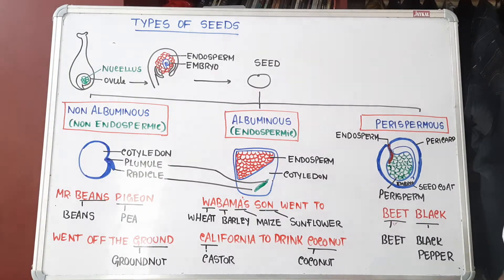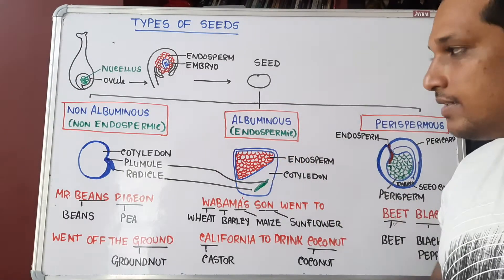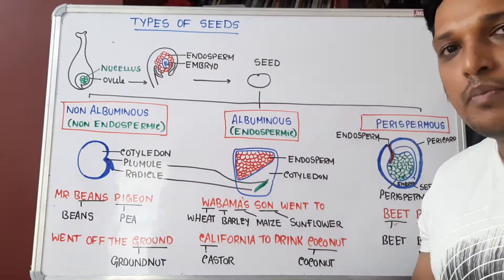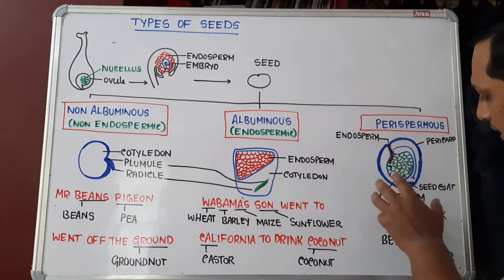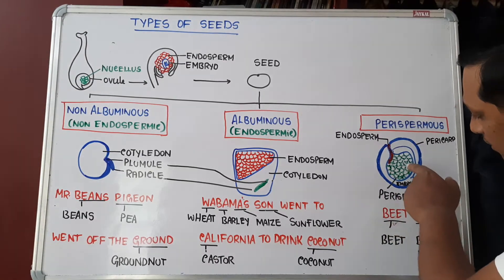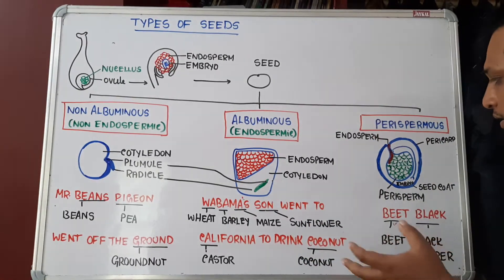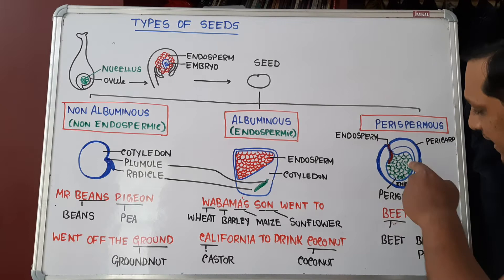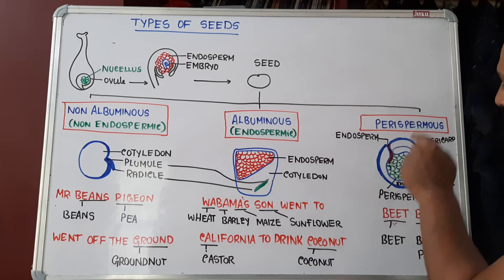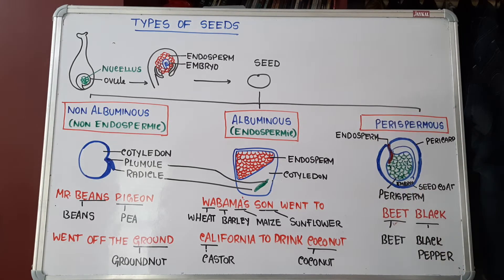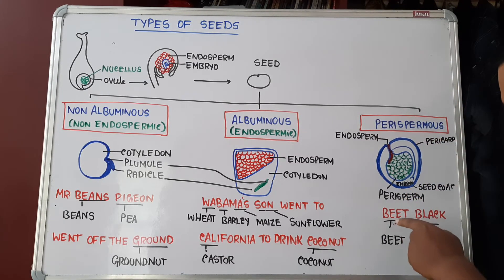The third type of seeds are called perispermous seeds. Inside the ovule there is nucellus. Usually in non-albuminous and albuminous seeds, the nucellus degenerates once the embryo and endosperm are formed. But in certain seeds like pepper, the nucellus is retained even after development. Seeds that retain the nucellus — along with a little endosperm — are called perispermous seeds, and the retained nucellus is called perisperm.